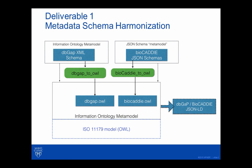In the first deliverable, we used an OWL model of ISO 11179 and we created converters that took the dbGaP XML schema and converted it into an OWL representation. The BioCADDI JSON schemas — version 1.0 was the one we worked with — were also converted into a particular OWL representation. We then used the OWL representation to propose alignments, discover potential issues, and examine the ramifications of stating that variables are about the same thing.